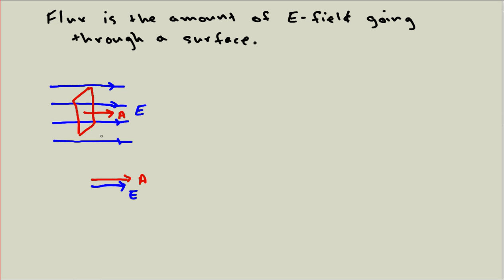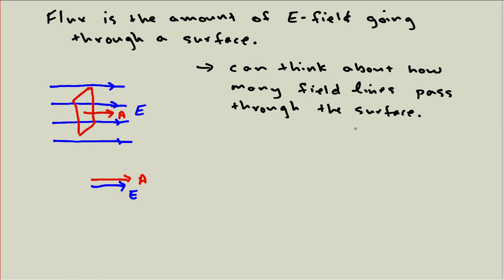If we want to think about how much electric field is going through the surface, one way to think about that is just counting electric field lines. So I already did that a little bit. I have a couple of electric field lines here. If I had a stronger electric field where I had a lot more lines drawn, then more lines would pass through the surface. So that's a useful tool for thinking about electric flux. You can think about how many field lines pass through the surface. And that'll be a useful trick that we'll come back to a little bit later.